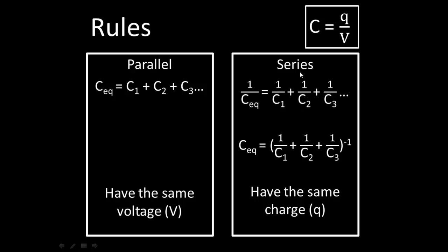Capacitors in series are a little different. They add inversely. And since they add inversely, that makes the equivalent capacitance less than each individual component that was added. For capacitors in series, they have the same charge Q running through each capacitor.